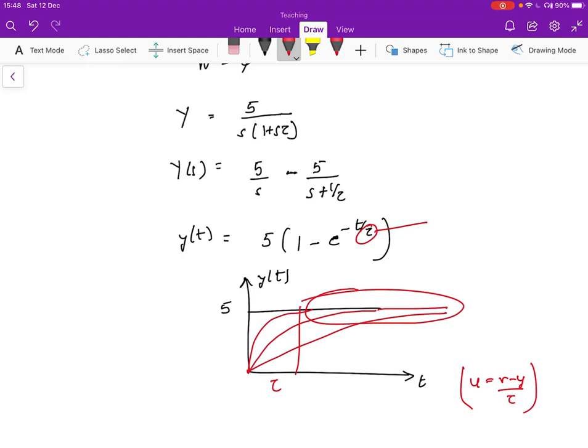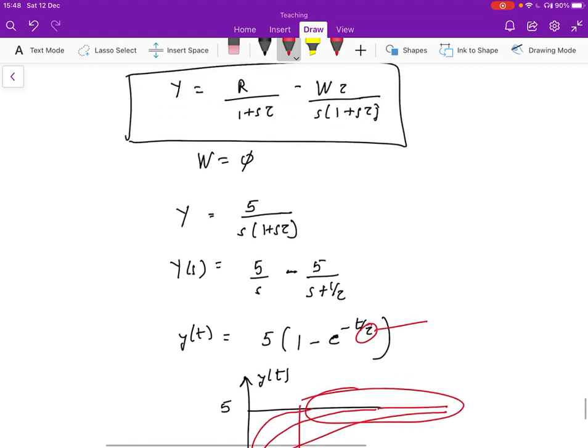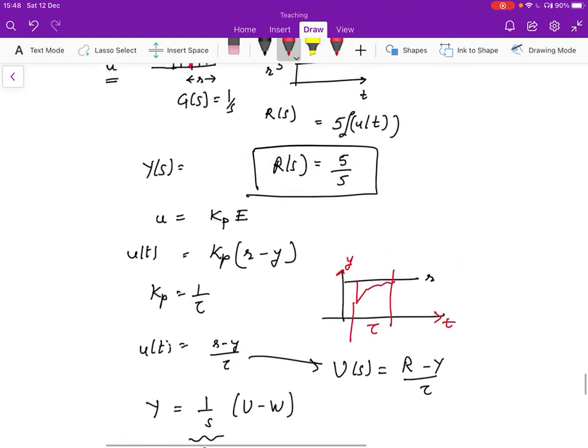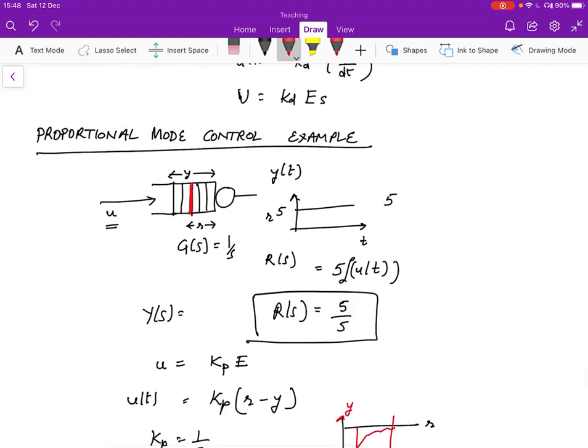So this should hopefully give some idea of how proportional mode control allows us to control the value of the set point over here, which is the number of packets in the buffer, to be about five packets over here.